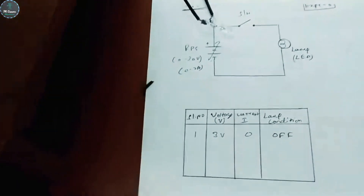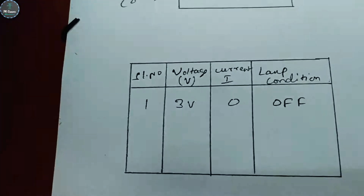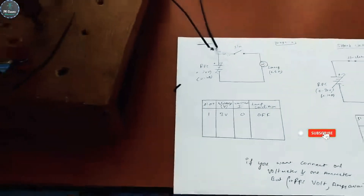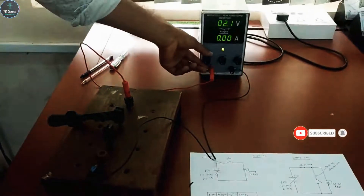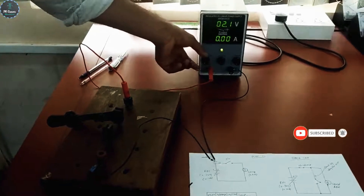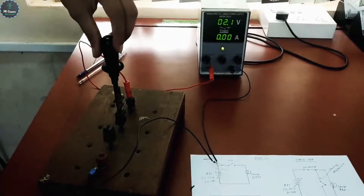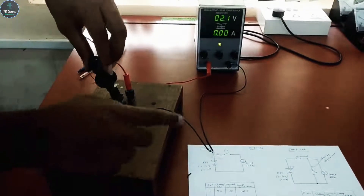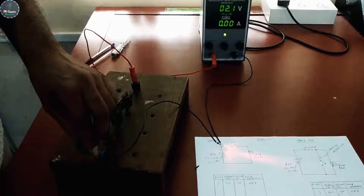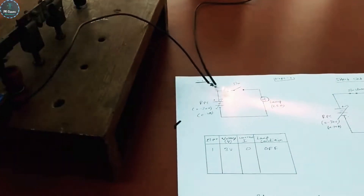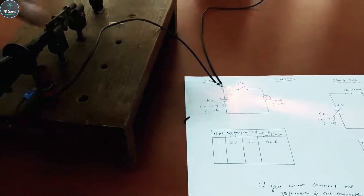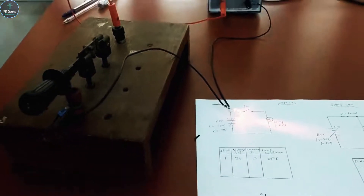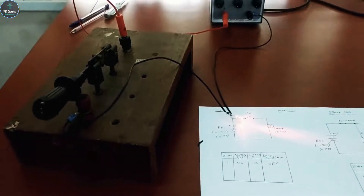Next we will conduct the closed circuit test — although closed circuit is not in our syllabus, I will demonstrate it. I have given 2.0 volts. I will close the switch — the lamp will be glowing. This is the closed circuit; continuity is present — it is normal working condition. That is the closed circuit, but it is not in our syllabus.